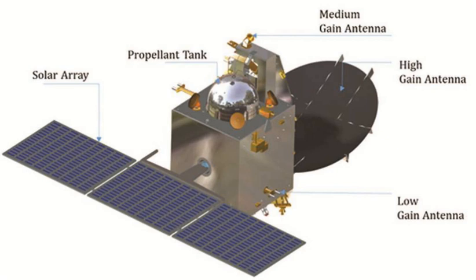The Mars Exospheric Neutral Composition Analyzer is a quadrupole mass analyzer capable of analyzing the neutral composition of particles in the range of 1 to 300 atomic mass units with unit mass resolution. The heritage of this payload is from Chandra's Altitudinal Composition Explorer payload aboard the Moon Impact Probe in Chandrayaan-1 mission. MENCA is planned to perform five observations per orbit with one hour per observation.